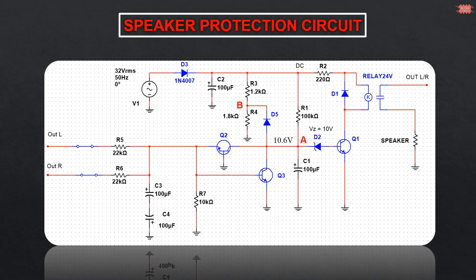Resistor R2 is used to drop voltage to protect the relay. Diode D3 and capacitor C2 form a half-wave rectifier.